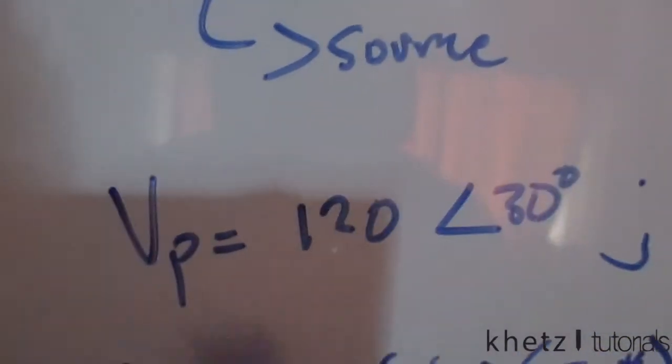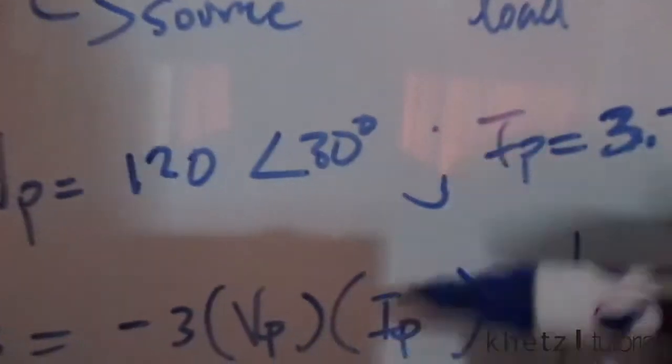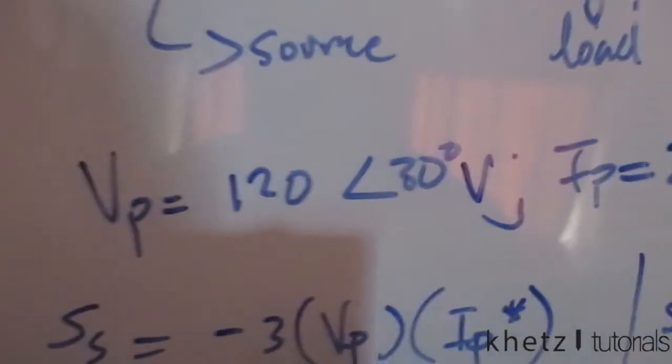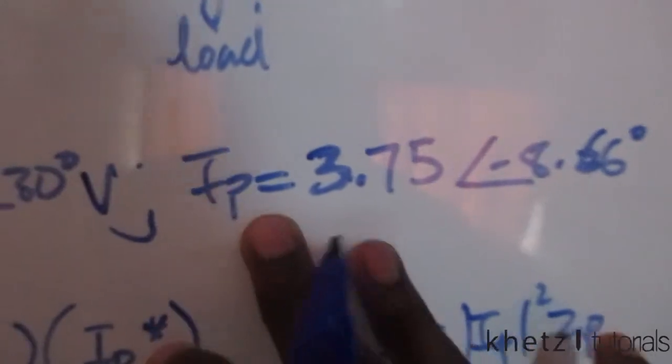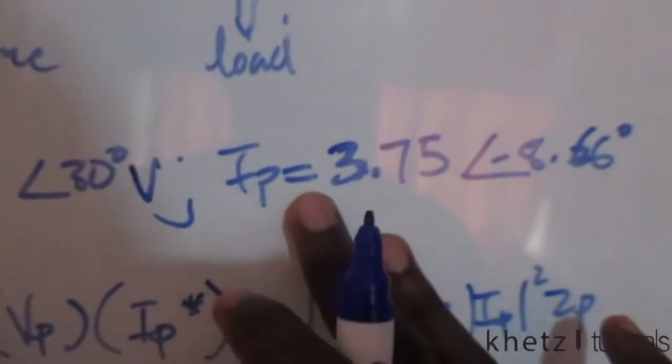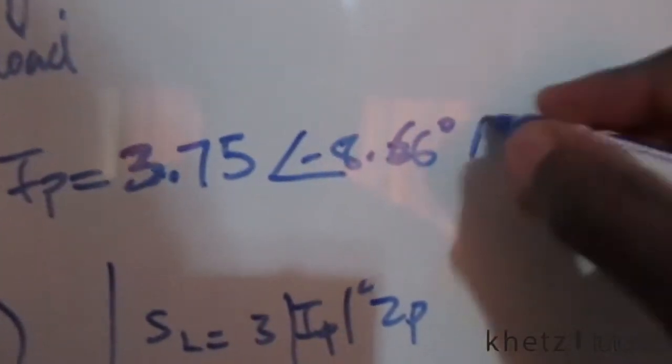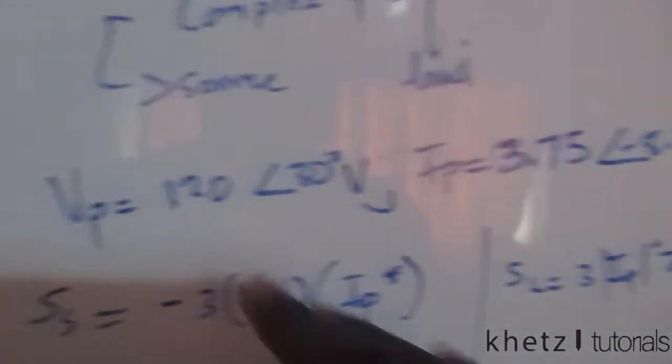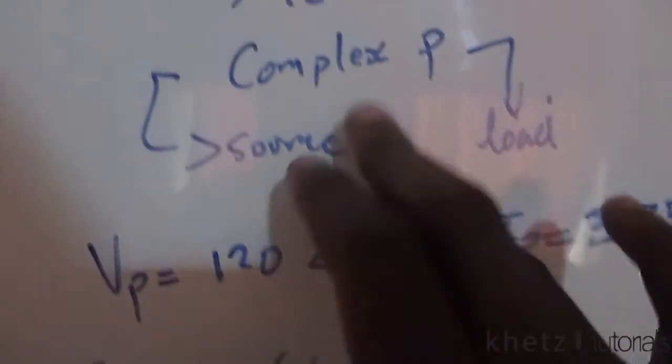In the question we're given the phase voltage, and this is the value of the phase voltage Vp = 120∠0°V. In one of the problems we calculated the phase current Ip = 3.75∠-8.66°A. Now that we have the phase voltage and phase current, we are asked to find the complex power at the source and at the load.